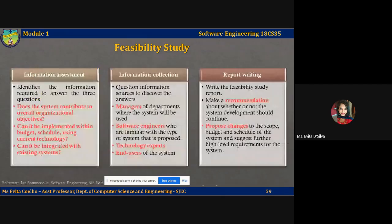If a system does not support the business objectives, it has no real value to the business. While this may seem obvious, many organizations develop systems which do not contribute to their objectives — either because they don't have a clear statement of these objectives, because they fail to define the business requirements for the system, or because other political or organizational factors influence the system procurement. Carrying out a feasibility study involves three major steps: information assessment, information collection, and report writing.